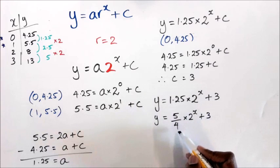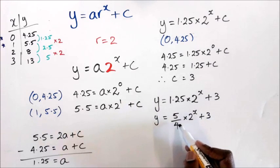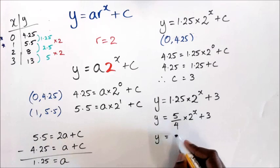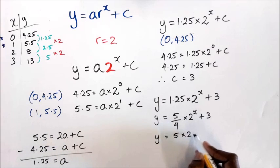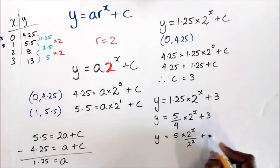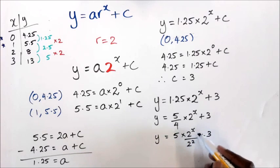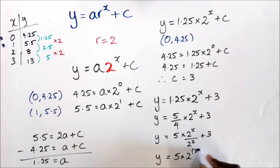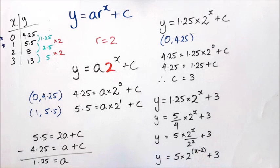The key is noticing that 4 can be written as 2 to the power of 2. So you can write this as 5 multiplied by 2 to the power of x, divided by 2 squared, plus 3. Using the indices rule, this becomes y equals 5 times 2 to the power of x minus 2, plus 3.